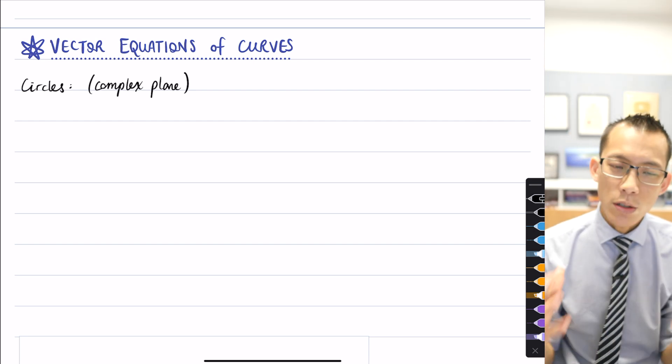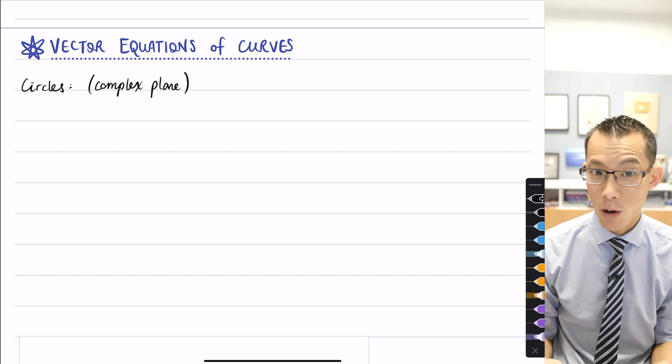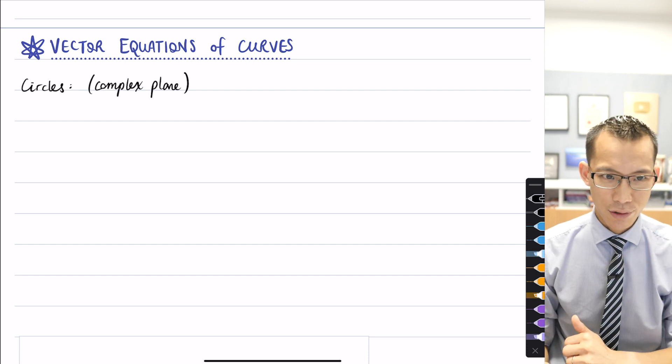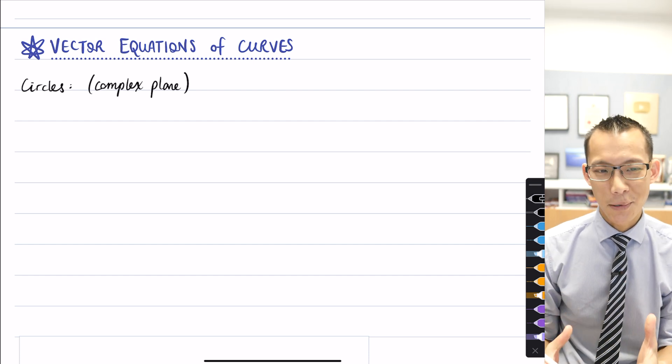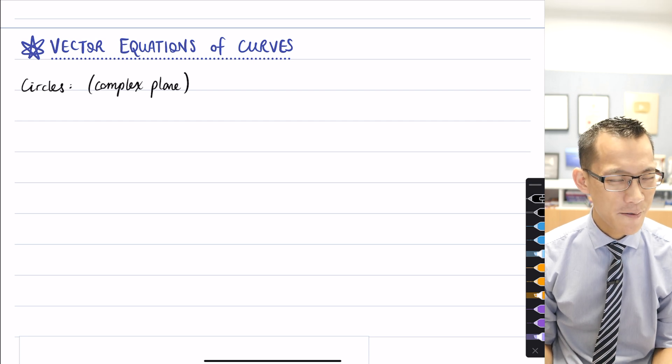Or you know r cos theta, r times cos theta plus i sine theta rather is over there. We also looked at graphing regions or sets of complex numbers on the complex plane and the equation of a circle is really nice and simple in complex number language. Does anyone remember it?